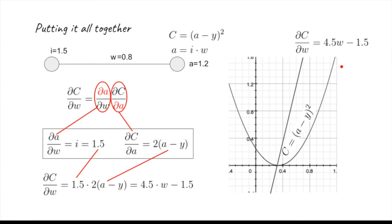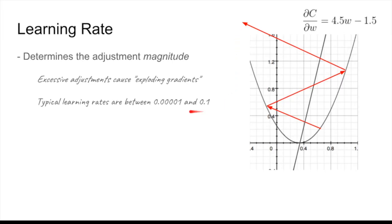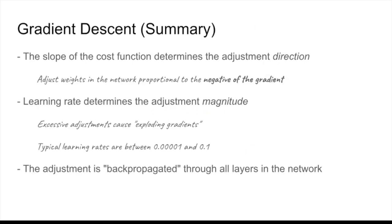We change these variables proportionately to the negative of the gradient, so on this side, where the gradient is positive, we decrease the weight. There is one more piece to the puzzle: the learning rate. We already know the direction from the gradient, but if you simply subtracted the raw gradient value 1.2 from the weight, you would end up way off target. This is called the exploding gradients problem — you end up bouncing off the walls and getting further and further from the minimum. Typically, learning rates are fairly small, below 1.